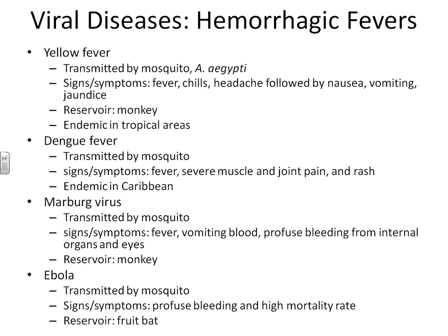Another hemorrhagic fever is called dengue fever. It is also transmitted by a mosquito, but we are not 100% sure what the common reservoir for this hemorrhagic fever is. This disease is endemic in the Caribbean. Similar to yellow fever, once the mosquito transmits the virus from the reservoir to the human, the human immediately gets a fever. But instead of being followed by nausea and jaundice, we now see the fever leading to extreme joint pain and a pretty nasty rash all over the body. The rash is more of a dark red rash because of the heat in the body due to the high fever.